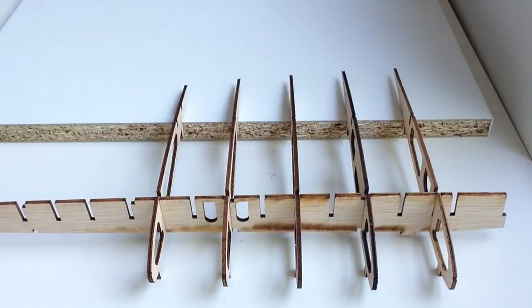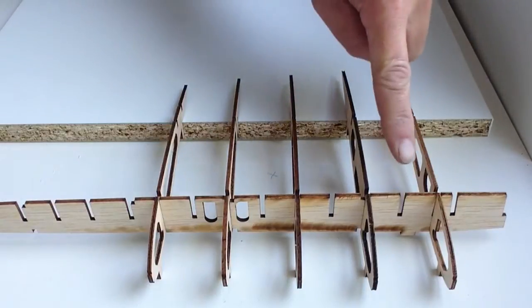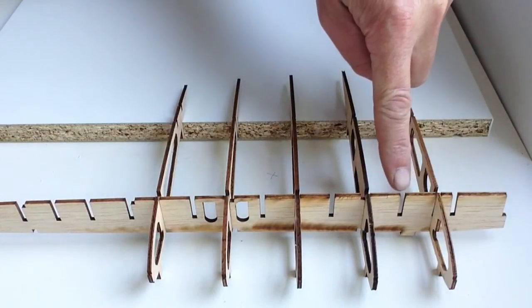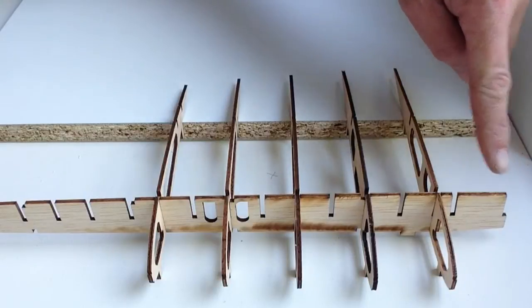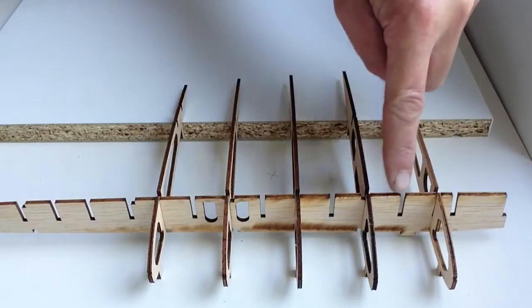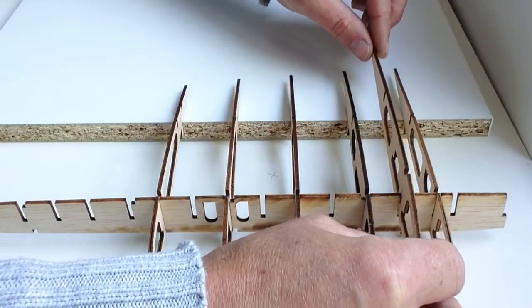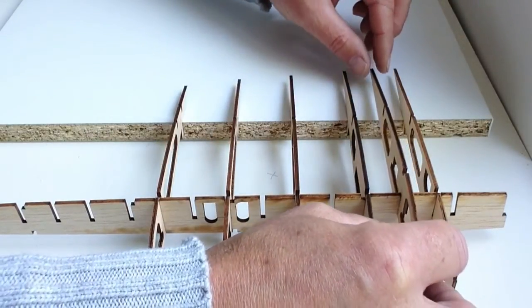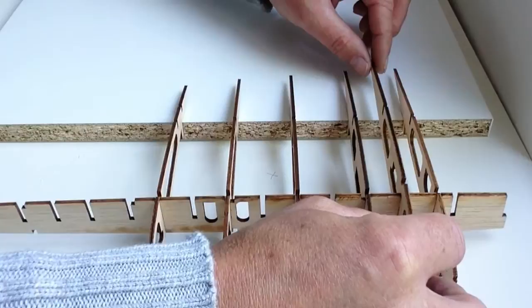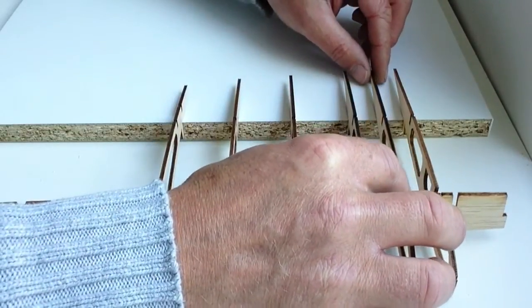Once you have done that, take rib number 12 and we are going to glue that into the fourth notch along. So the end is number 1, number 2, number 3, number 4. Just test fit that and then glue that into position once you are happy and that is sitting like that.